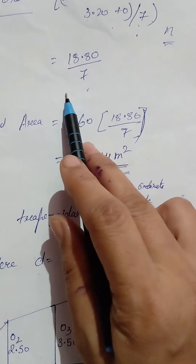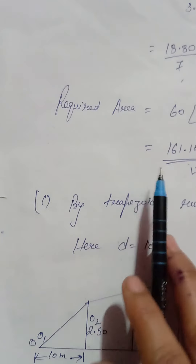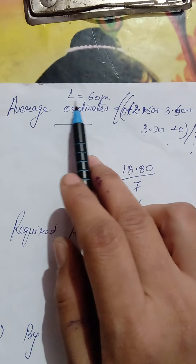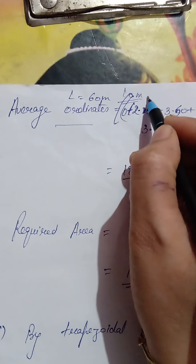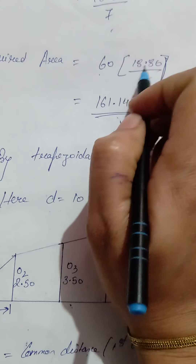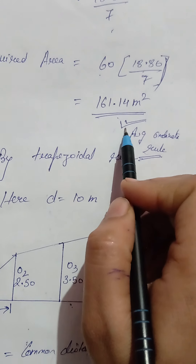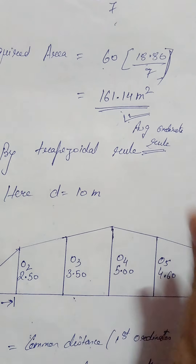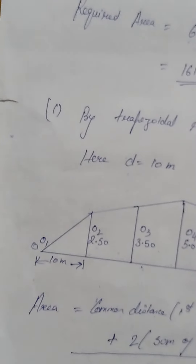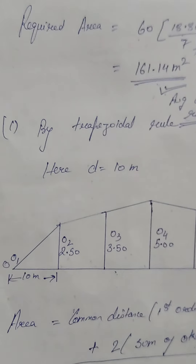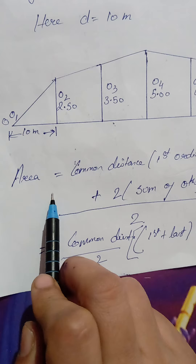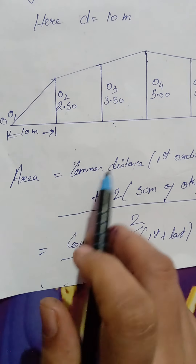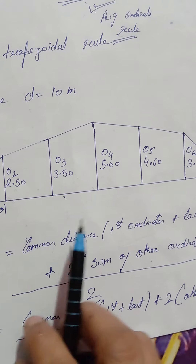Here D is 10 meters, the number of divisions N is 6, giving 7 ordinates. The base length L equals 6 into 10, that is 60 meters. The formula for average ordinate rule is L into average ordinate. The average ordinate is the sum of all ordinates — O1, O2, O3, O4, O5, O6, and O7 — divided by 7, since we have 7 ordinates.